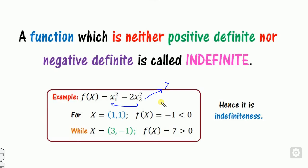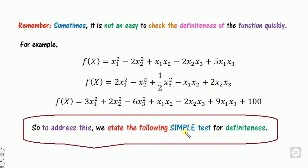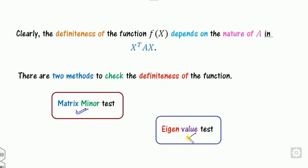For a more complex function, you can't determine definiteness trivially by inspection. For example, you cannot immediately say whether X^T A X is always greater than or less than 0. So for such problems we apply two systematic tests: the matrix minor test and the eigenvalue test. The definiteness of f(x) depends on the nature of the matrix A, since X is just the variable vector.